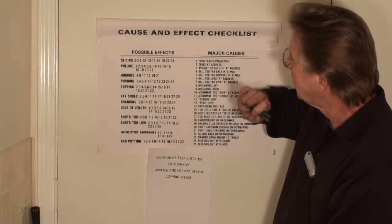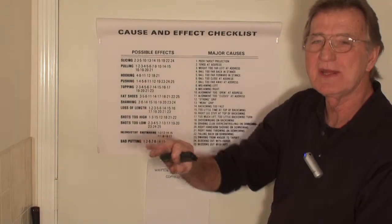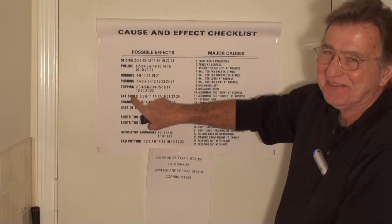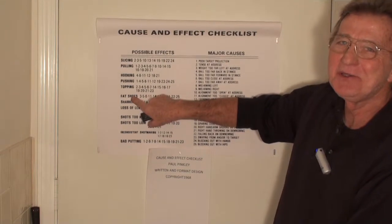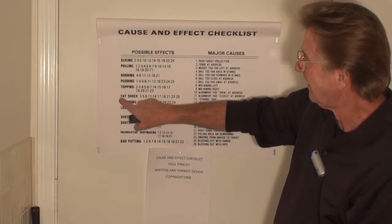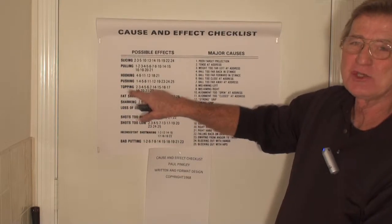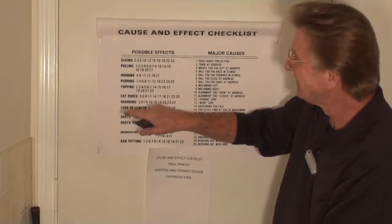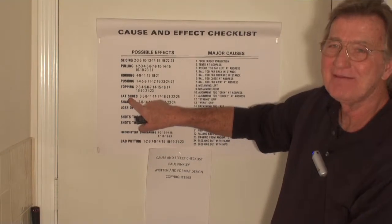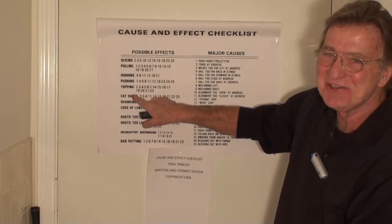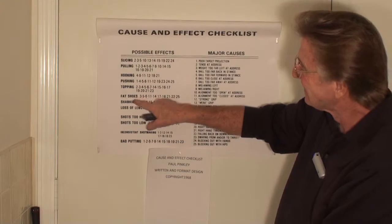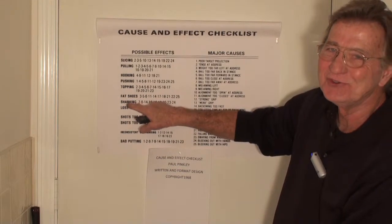And they printed it up, and shortly after getting it back, I noticed that I had misspelled 'fat shots' — taking a divot, you know — and I spelled it 'fat shoes.' Well, I would bet you that if you have fat shoes, you probably got quite a few bad swings. I hope you don't have fat shoes, okay?